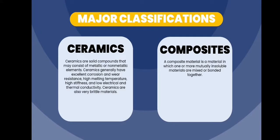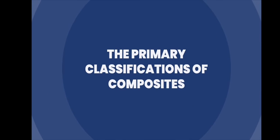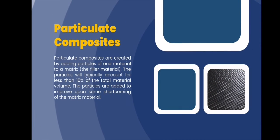Next is composites. A composite material is a material in which one or more mutually insurable materials are mixed or bonded together. Here are the primary classifications of composites. First, we have particulate composites. Particulate composites are created by adding particles of one material to a matrix. The particles will typically account for less than 15% of the total material volume. The particles are added to improve upon some shortcoming of the matrix materials.